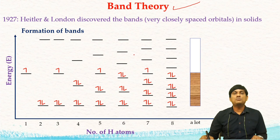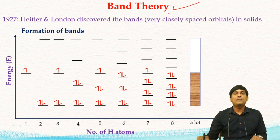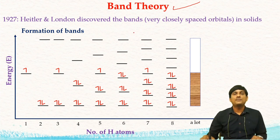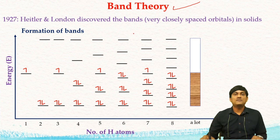Dear friends, welcome to Bond with RK Chemistry YouTube channel. In this video, I am going to explain the last theory in theories of bonding, that is band theory. In 1927, Heitler and London discovered bands in solids. Bands are nothing but a collection of very closely spaced orbitals.